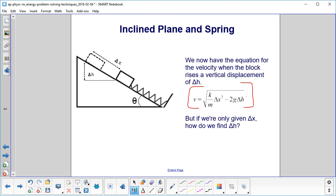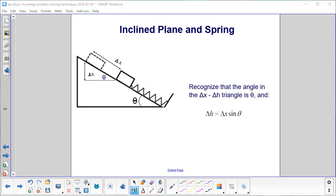The problem is, this one right here, we were not given delta h to solve the problem. So how do we find it? Recognize through geometry that this angle right here is the same as this angle that the incline makes, so therefore, delta h will just be delta x sine theta.